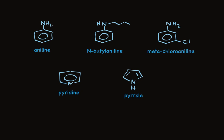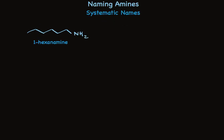For systematic nomenclature of amines, for simple alkyl amines, name the compound as an alkane and then drop the -e, replacing it with -amine. You'll also need to indicate where the amino group is, so this is 1-hexanamine. If there's something attached to the nitrogen as well, we need to say there's a group attached and where it is — so we'll use a capital N: N-cyclopentyl-1-hexanamine.